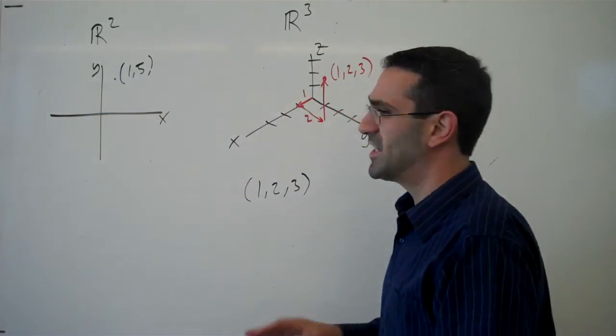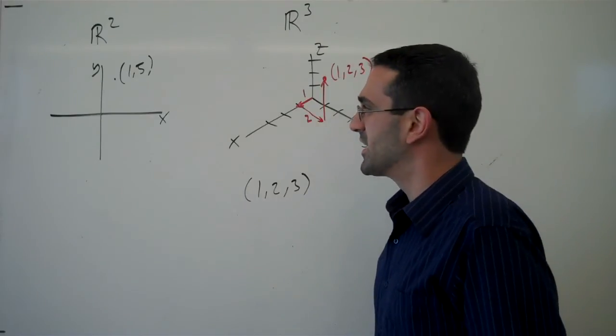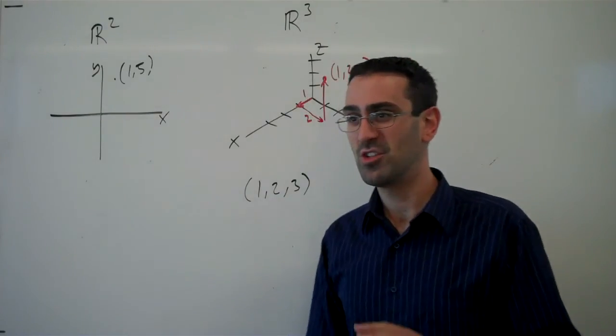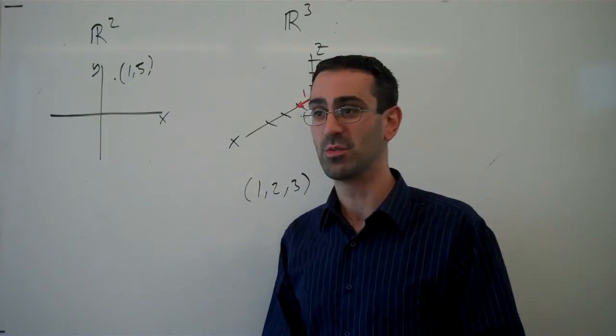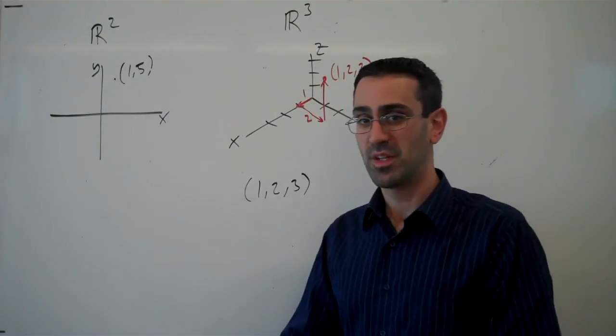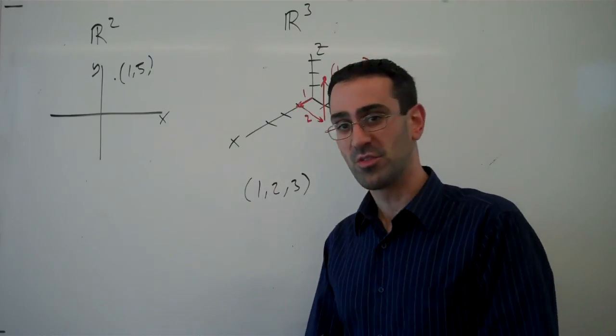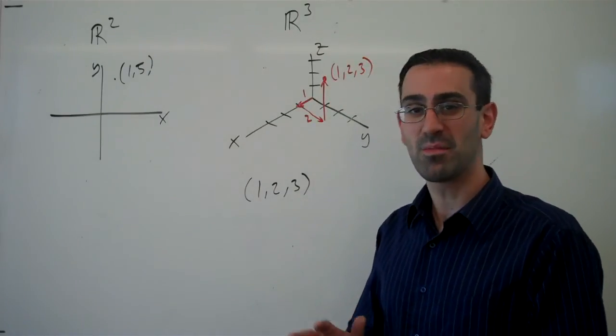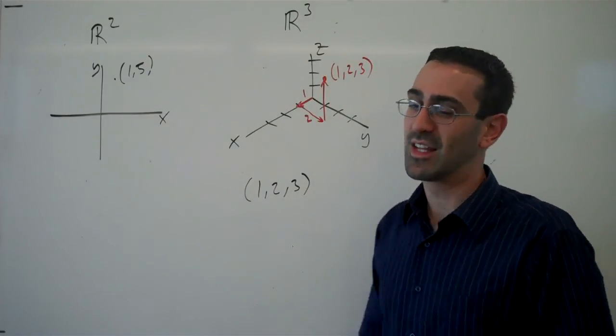Just as an interesting piece of information, computer scientists tend to use the left-hand rule instead of the right-hand rule, and their positive z-axis goes into the board. So if you're familiar with 3D coordinates from computer graphics, be aware that in mathematics we treat things slightly differently.